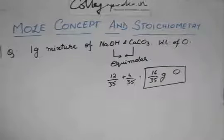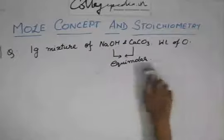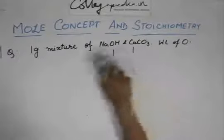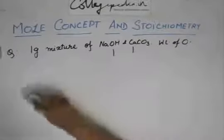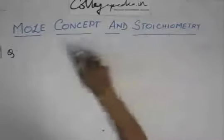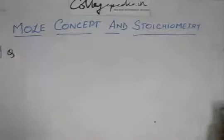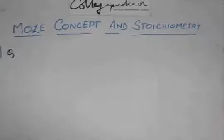So the total weight of oxygen in the mixture is 12/35 + 4/35 — the 12/35 coming from CaCO3 and 4/35 coming from NaOH — which equals 16/35 grams of oxygen. This is how you go about it. Now we have another type of question in which the weights of the compounds are equal but their moles are not equal.